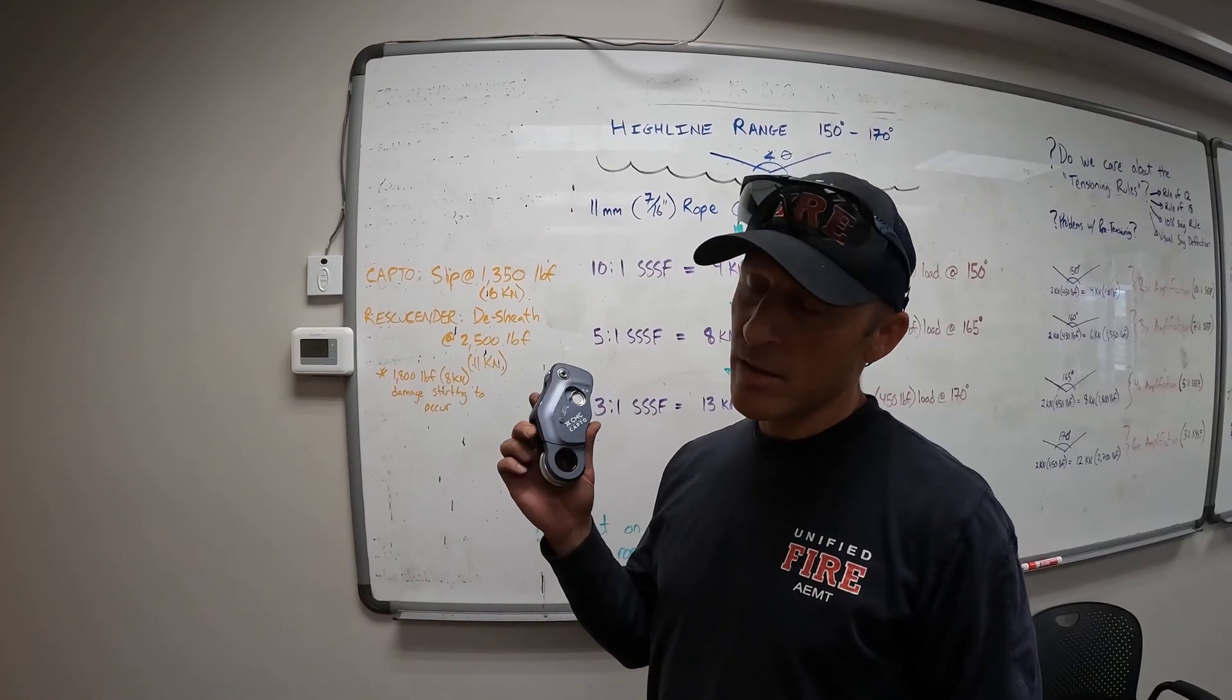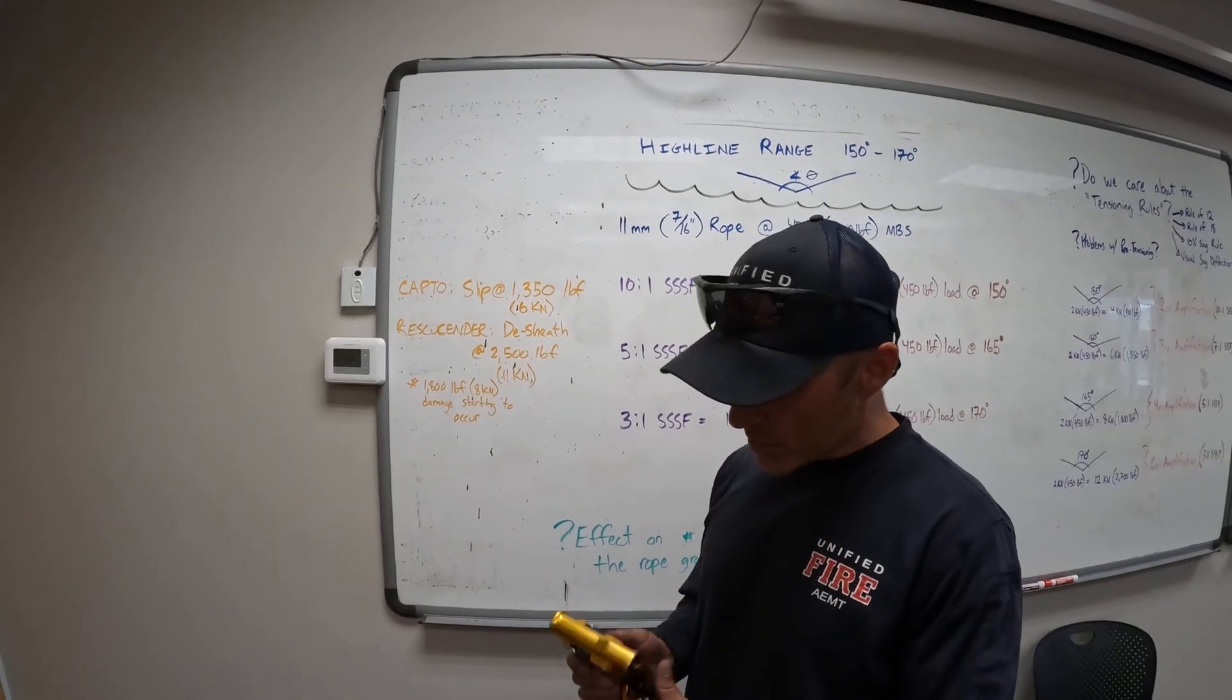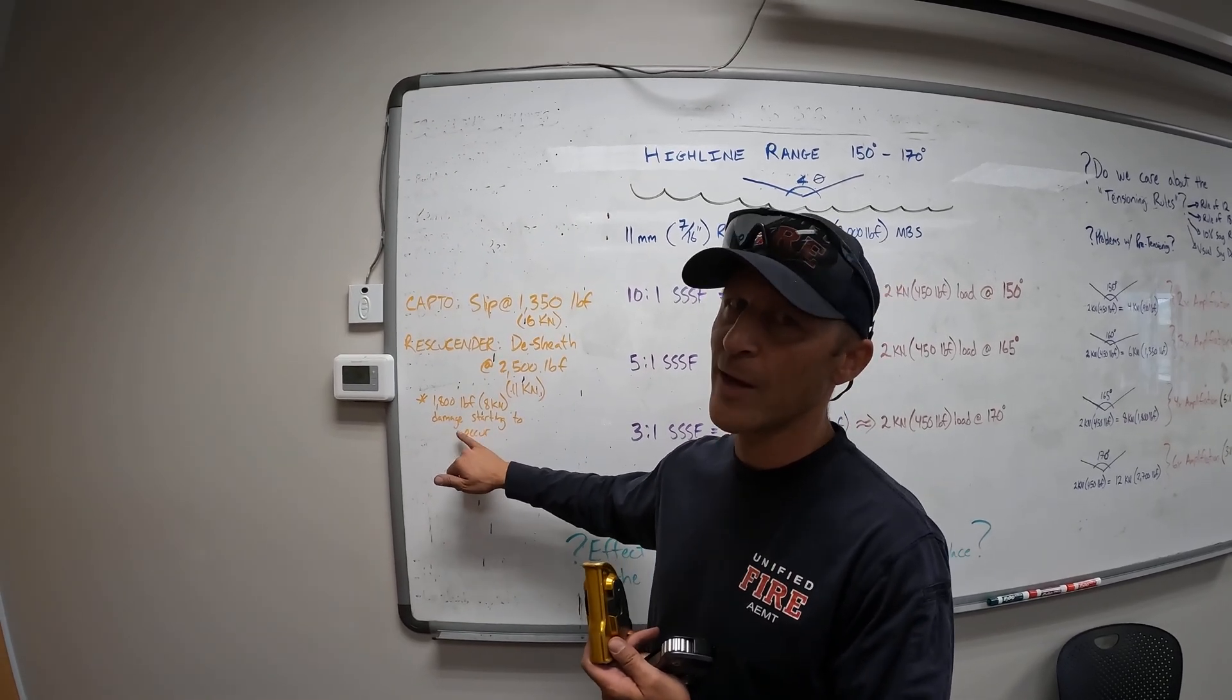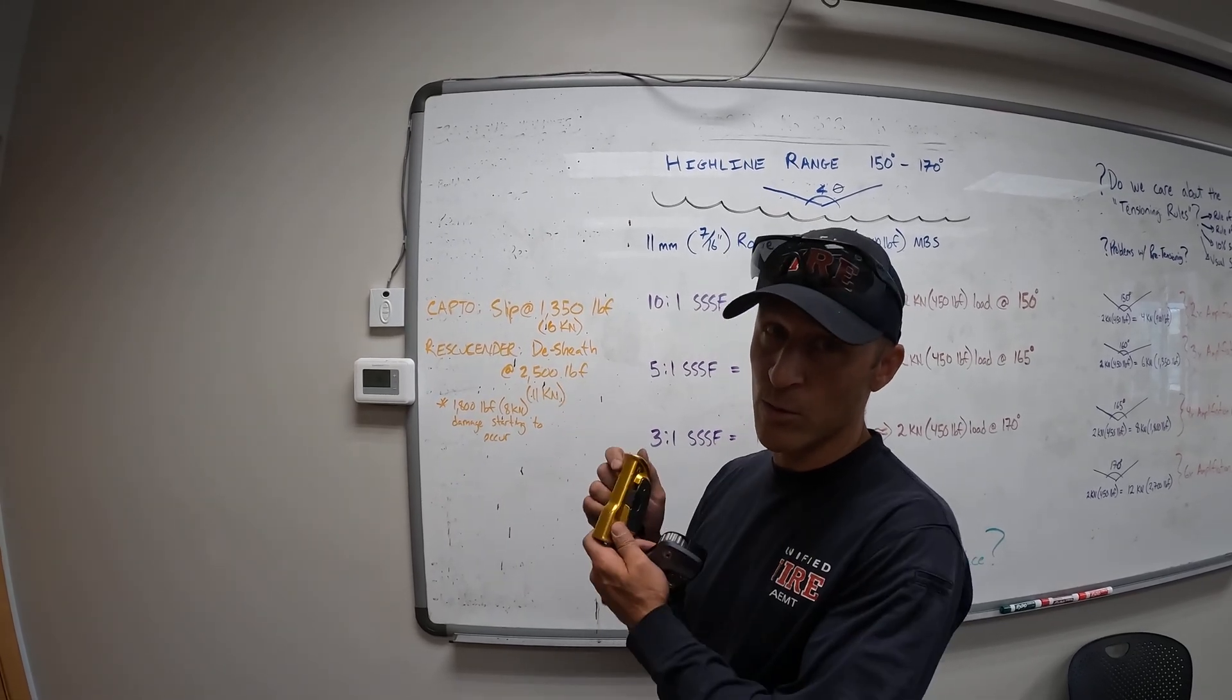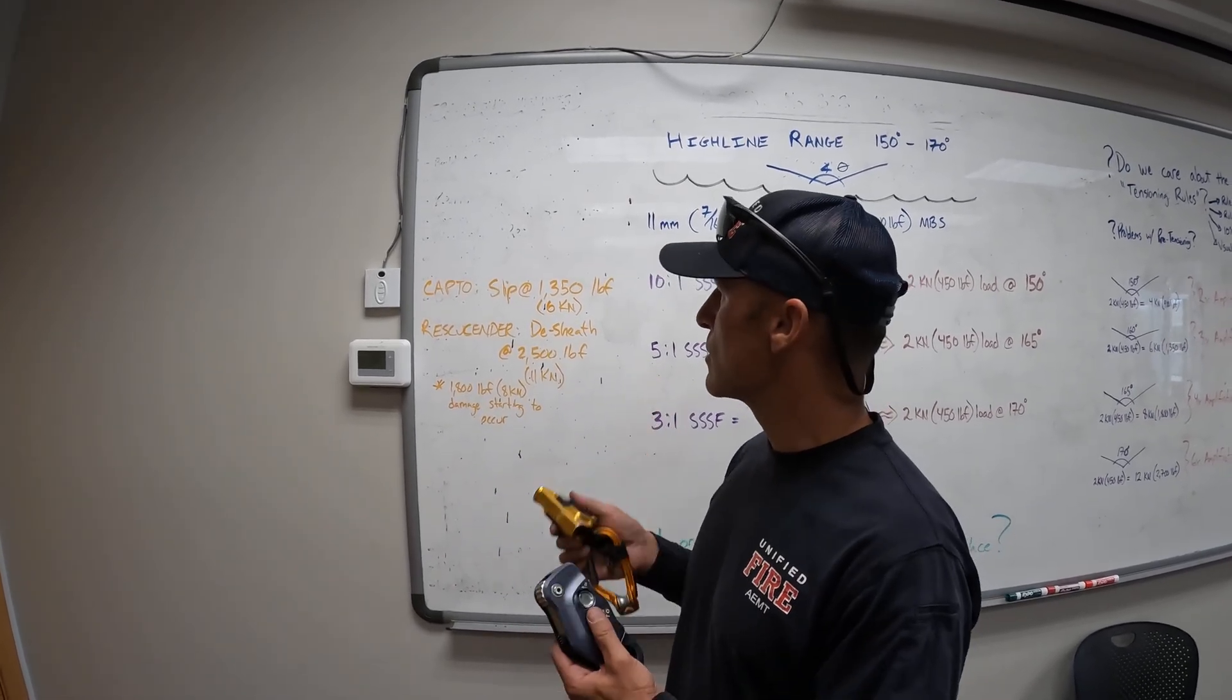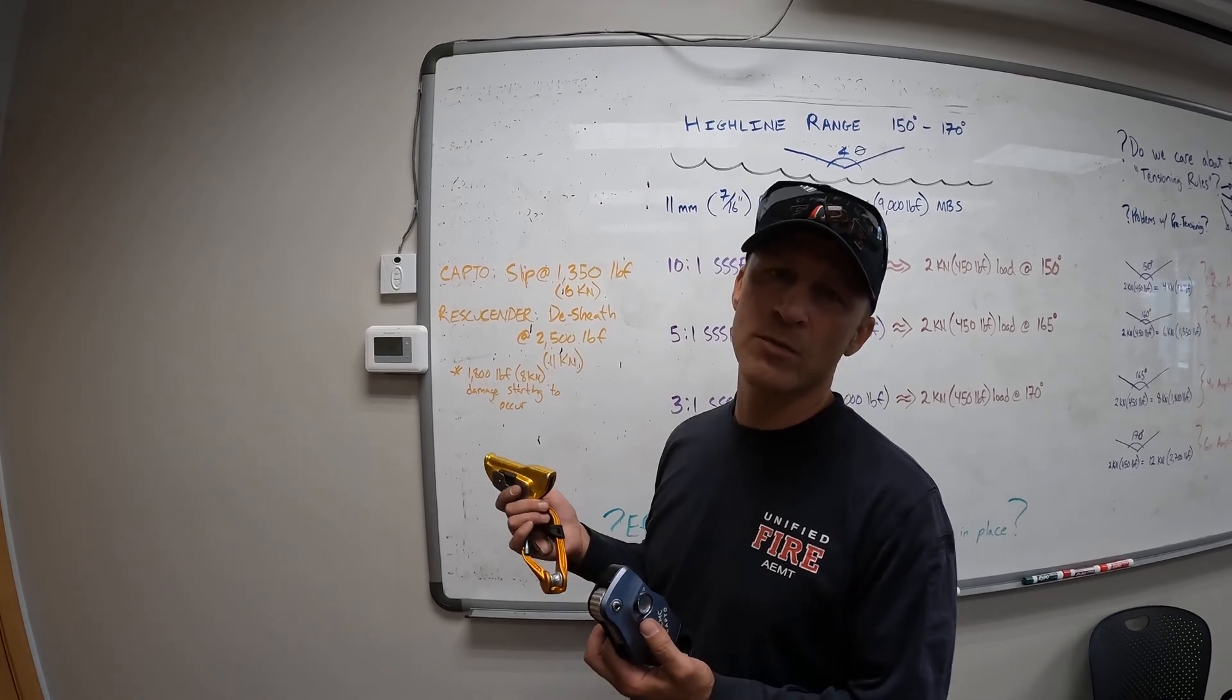The CMC Capto slipped under what we would call slow pull applications tensioning high lines at six kilonewtons or 1350 pound force. The rescue center, the new ones, did not slip. At 1800 pounds there was some damage starting to occur. Cameraman noticed that, but we didn't actually get what we thought was a slip, it was actually the rope de-sheathing. Anywhere between 8 to 11 is the danger zone for the rescue center on a slow pull application.